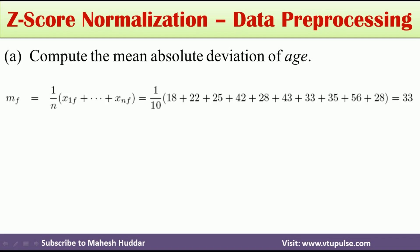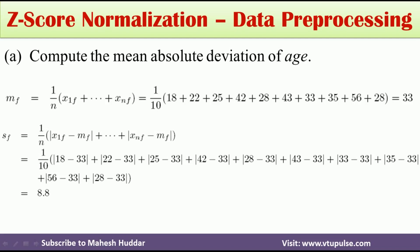To calculate the mean absolute deviation, we use the equation: MAD = (|x1f − mf| + ... + |xnf − mf|) / n. Here x1f is 18 and the mean is 33, so |18 − 33|; similarly |22 − 33|, |25 − 33|, and so on through |28 − 33|. We take only the positive (absolute) values of these differences, then divide by n.